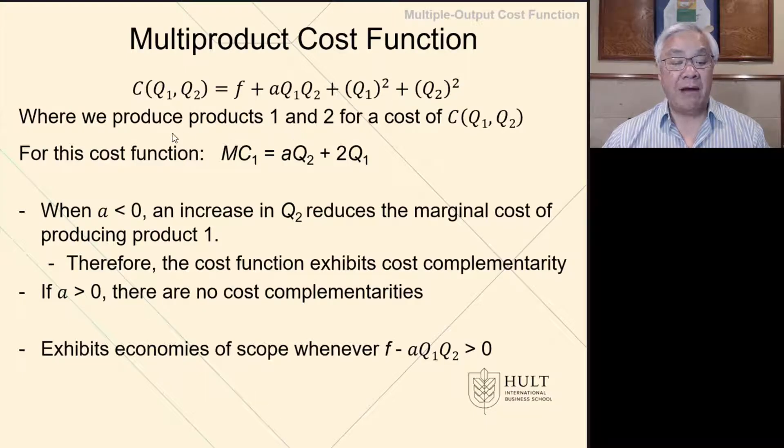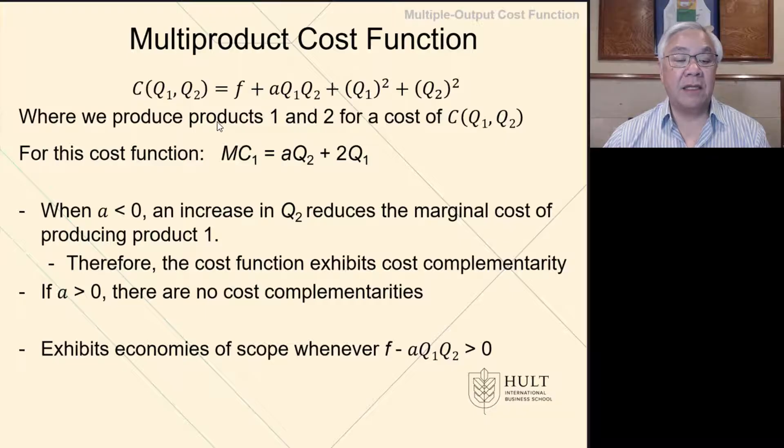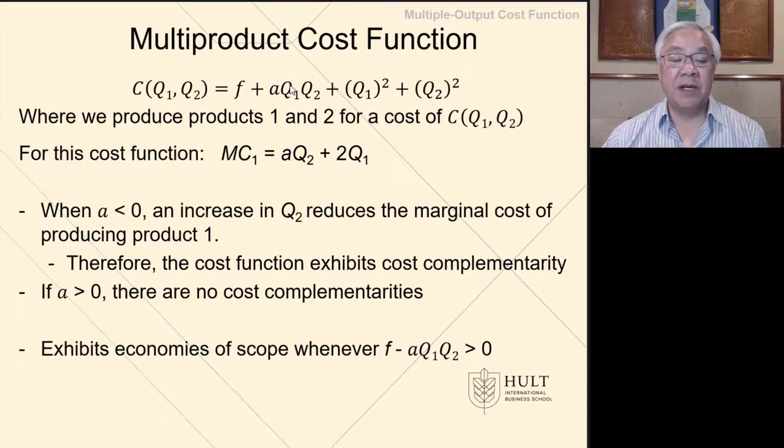So now we have a cost function where we can calculate the marginal cost. If we want to determine the marginal cost for product 1, we would differentiate the quantity with respect to Q1. So the F disappears. This Q1Q2 factor, the Q1 disappears because Q1 is to the first power and then it goes away. So it's AQ2 plus 2Q1 instead of squared, it drops to Q1 to the first power. And this term disappears as well because that's also a constant.